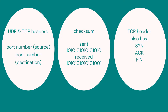UDP and TCP both have headers. When your computer transfers packets it opens a connection through something called a port, and inside the header we can put the port number of both the source and the destination. We can also use a checksum — a sum of the zeros and ones — to check that the data is the same when sent as when received. If the checksum is the same at both ends, the data is correct; if it's different, we know the data has been corrupted.